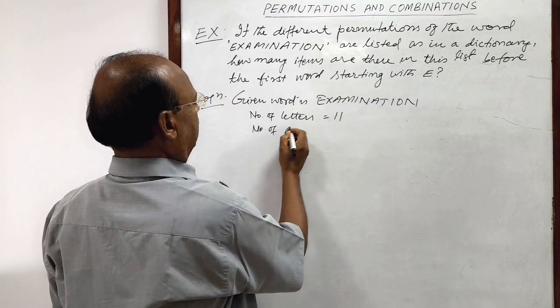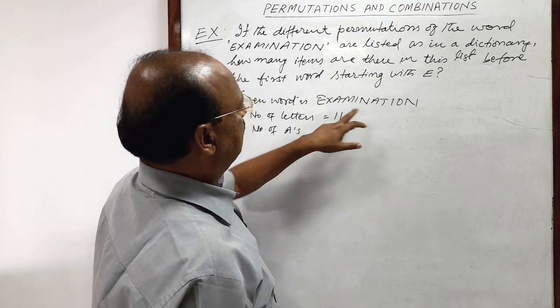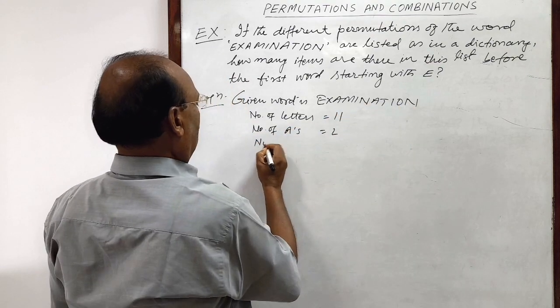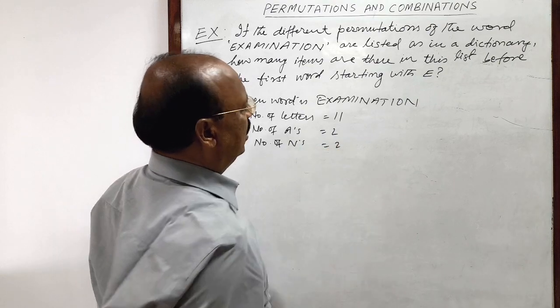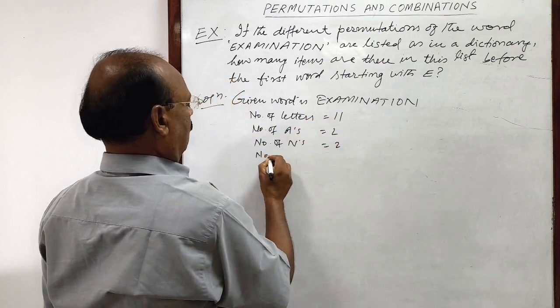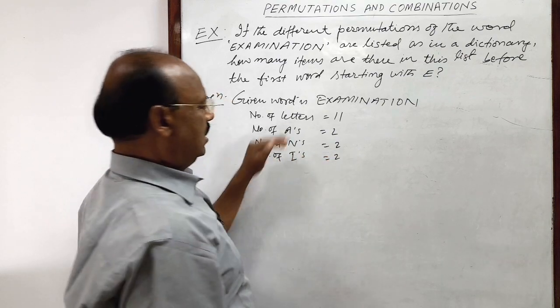Number of A's is equal to 2. Similarly, number of N is 2, number of N's is 2, number of I's is 2, number of I's is 2. These are repetitions.